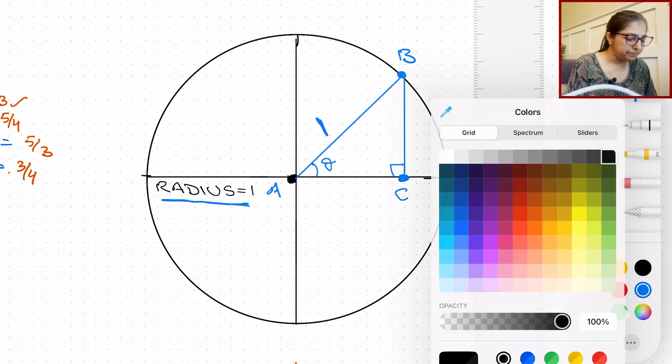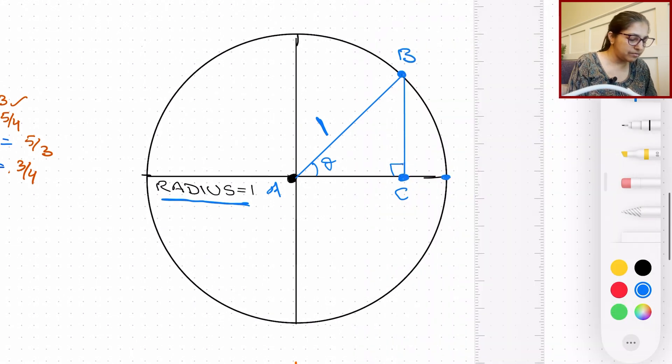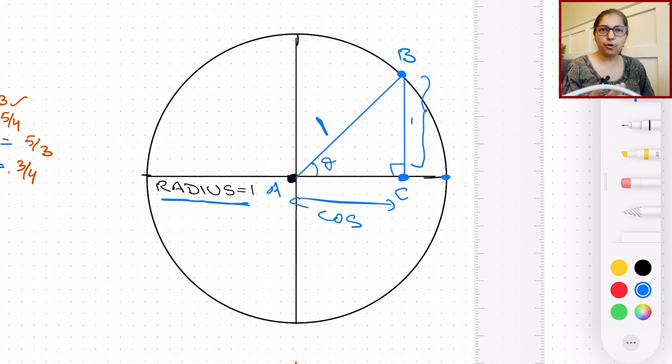So what is sine of theta? BC, which is right here, this is BC over one, which is nothing but the Y component. And here, what we have is the cosine. So if you follow along on the unit circle, the horizontal distance is always going to be cosine and the vertical is always going to be the sine.